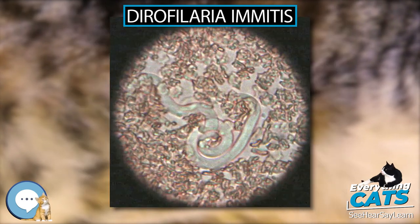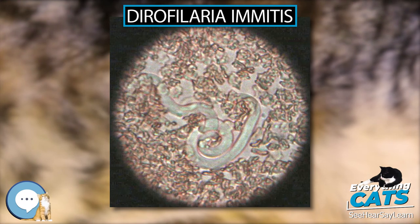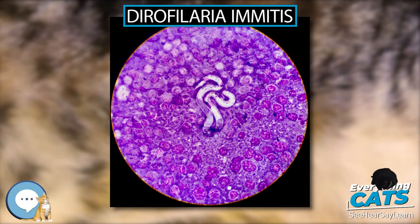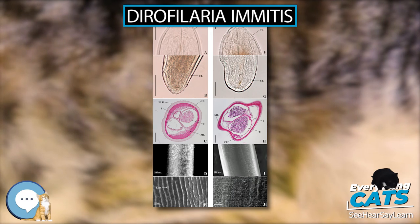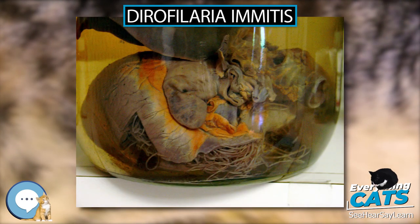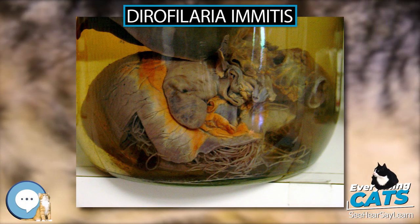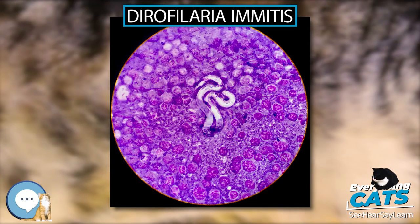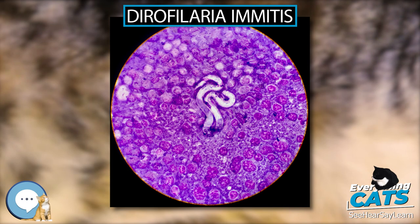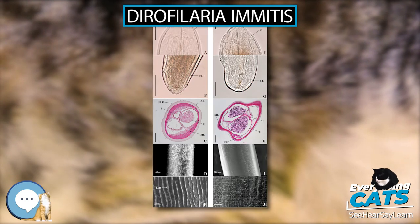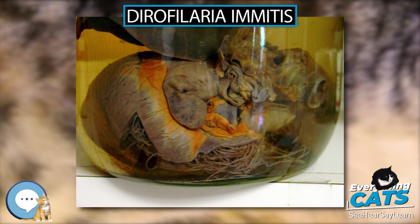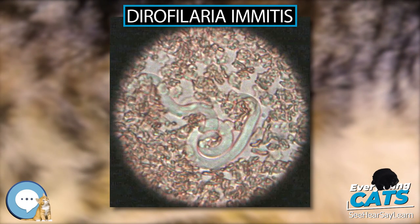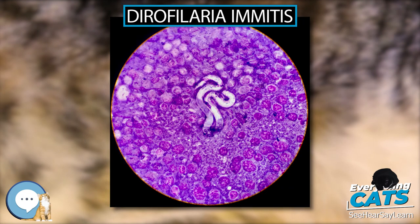Arsenic compounds have been used for heartworm adulticide treatment in cats as well as dogs, but seem more likely to cause pulmonary reactions. A significant number of cats develop pulmonary embolisms a few days after treatment. The effects of melarsomine are poorly studied in cats. Due to a lack of studies showing clear benefit and the short lifespan of heartworms in cats, adulticide therapy is not recommended, and no drugs are approved in the U.S. for use in cats. Treatment typically consists of putting the cat on a monthly heartworm preventive and a short-term corticosteroid. Surgery has also been used successfully to remove adult worms. Ivermectin, milbemycin, and selamectin are approved for use in cats in the U.S. The prognosis for feline heartworm disease is guarded.